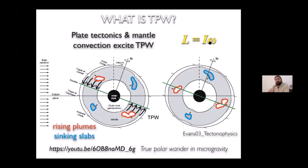Very simply, if we want to conserve angular momentum L, and there is a change in inertia — how mass is distributed — then you must change the location of the spin axis. So, arguably, the basic physics of true polar wander are quite simple compared with plate tectonics.